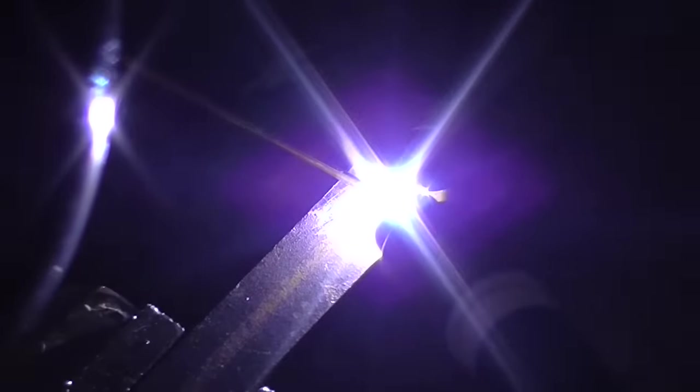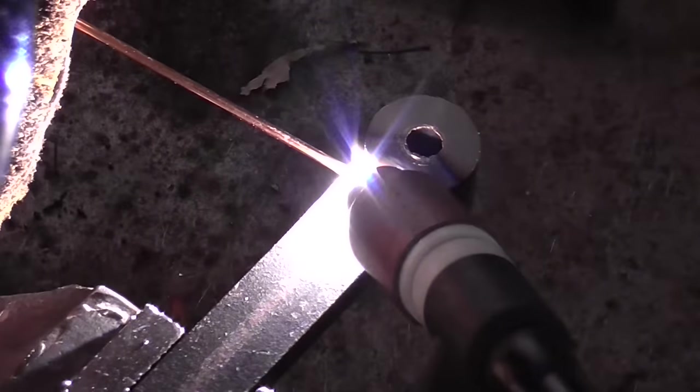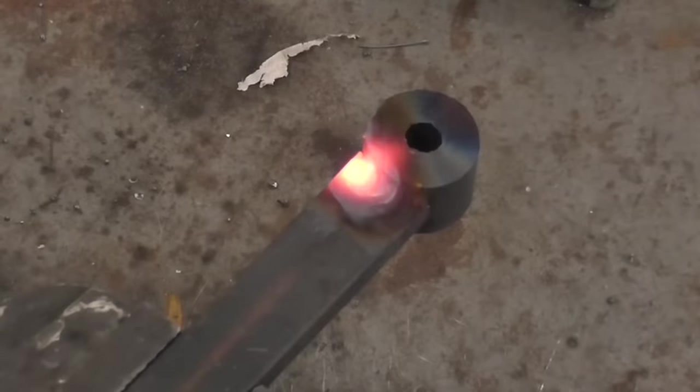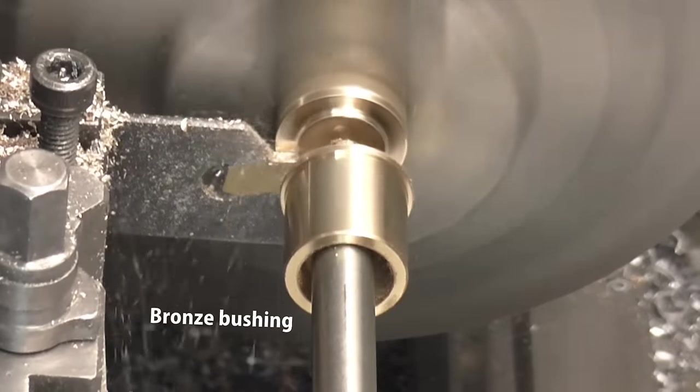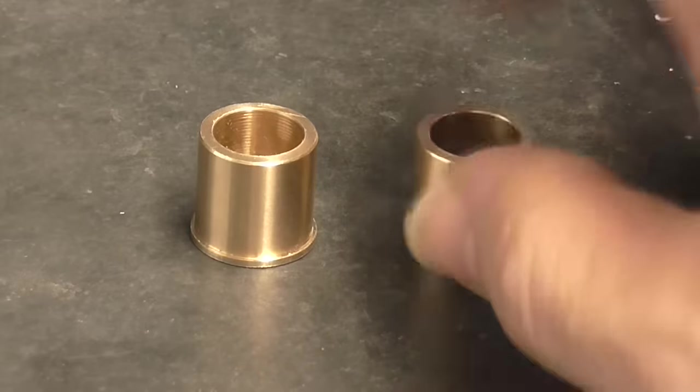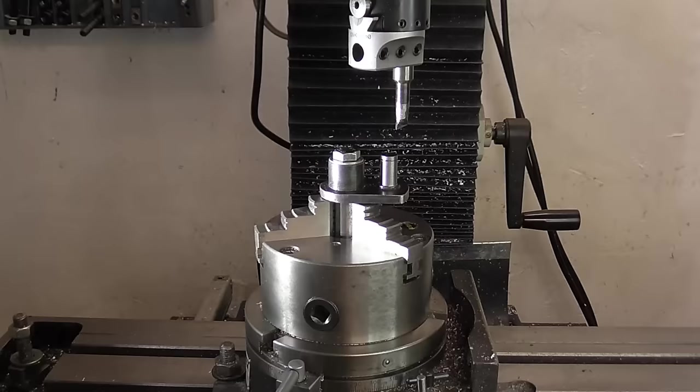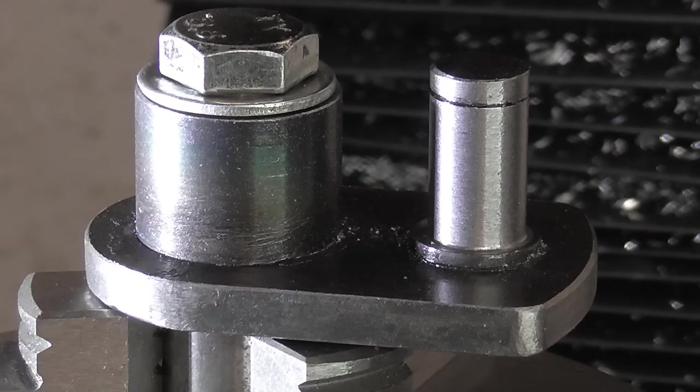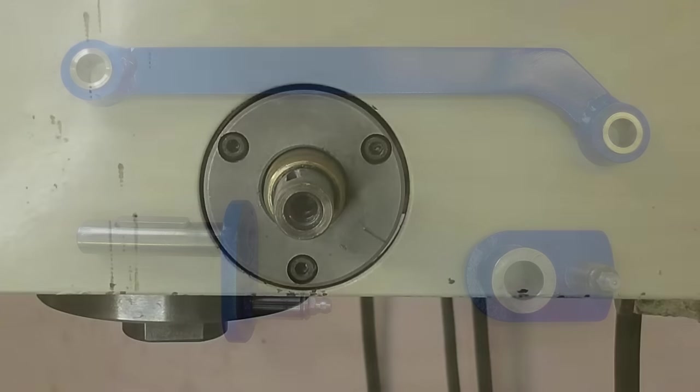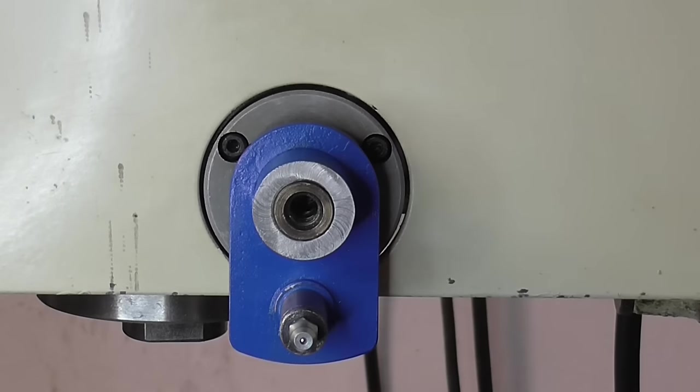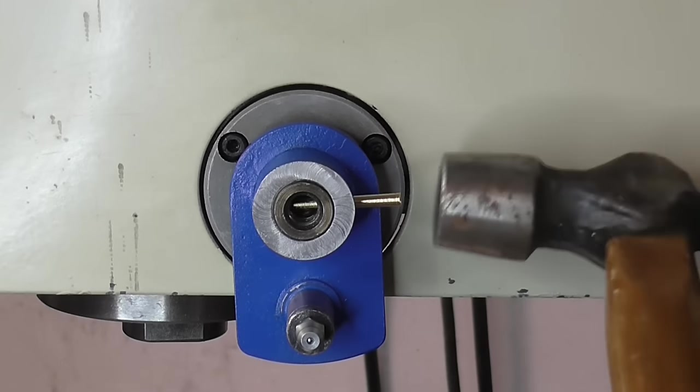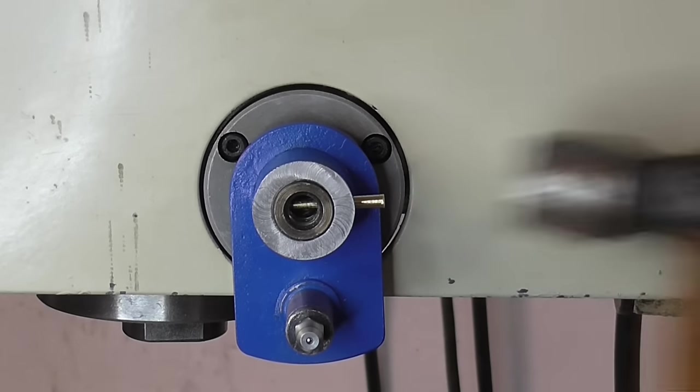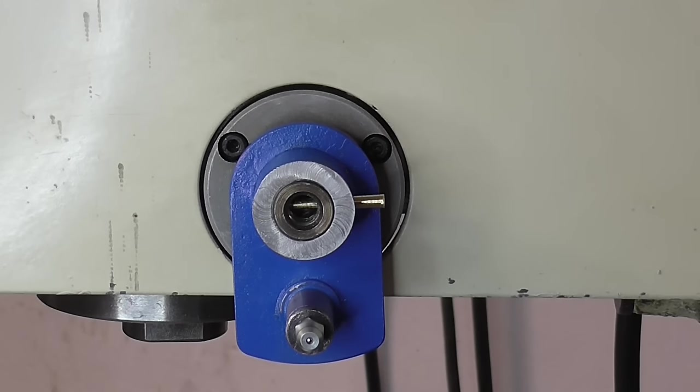Next I need a simple linkage to convert the rotary motion into up and down motion of the quill. I'm using a small tapered brass shear pin to connect to the quill feed shaft. This should break first and protect the rack and pinion gears in case of a jam occurring.